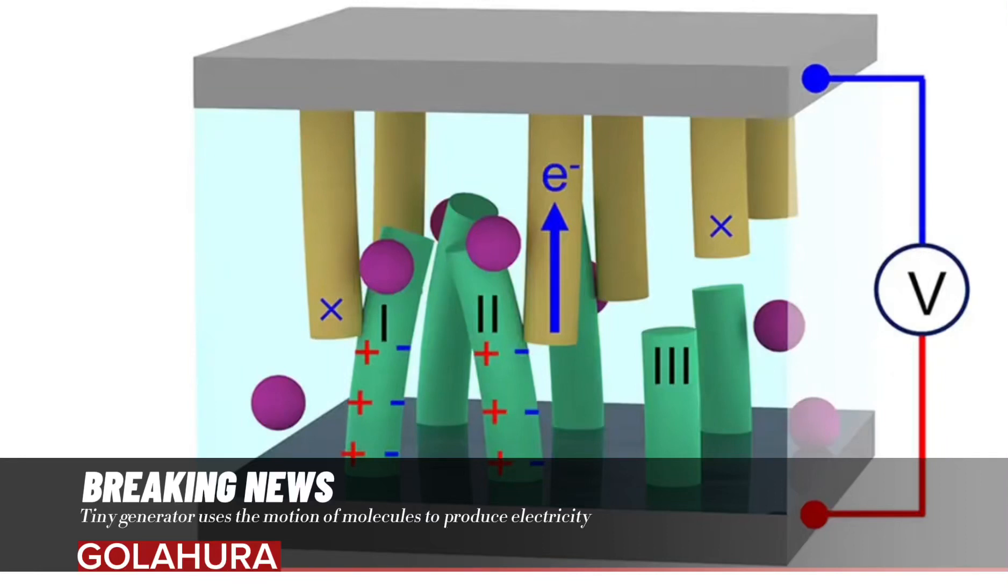A tiny generator uses the motion of molecules to produce electricity, generating electricity from the movements of molecules in a fluid. This could one day power devices like tiny medical implants or household appliances.